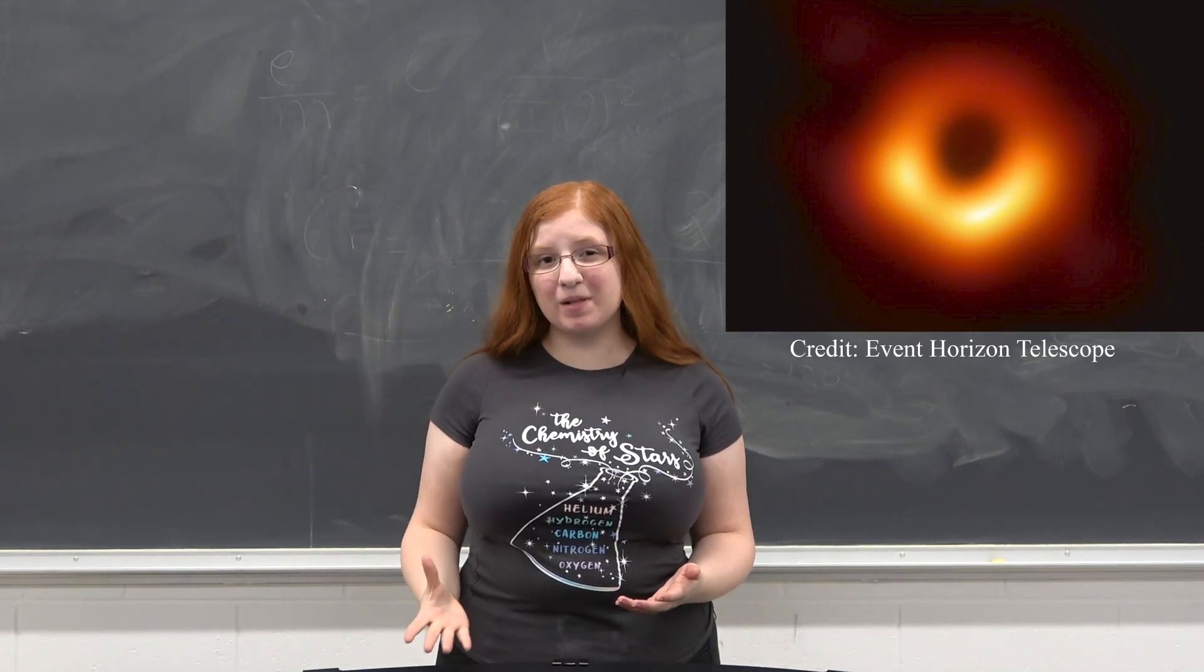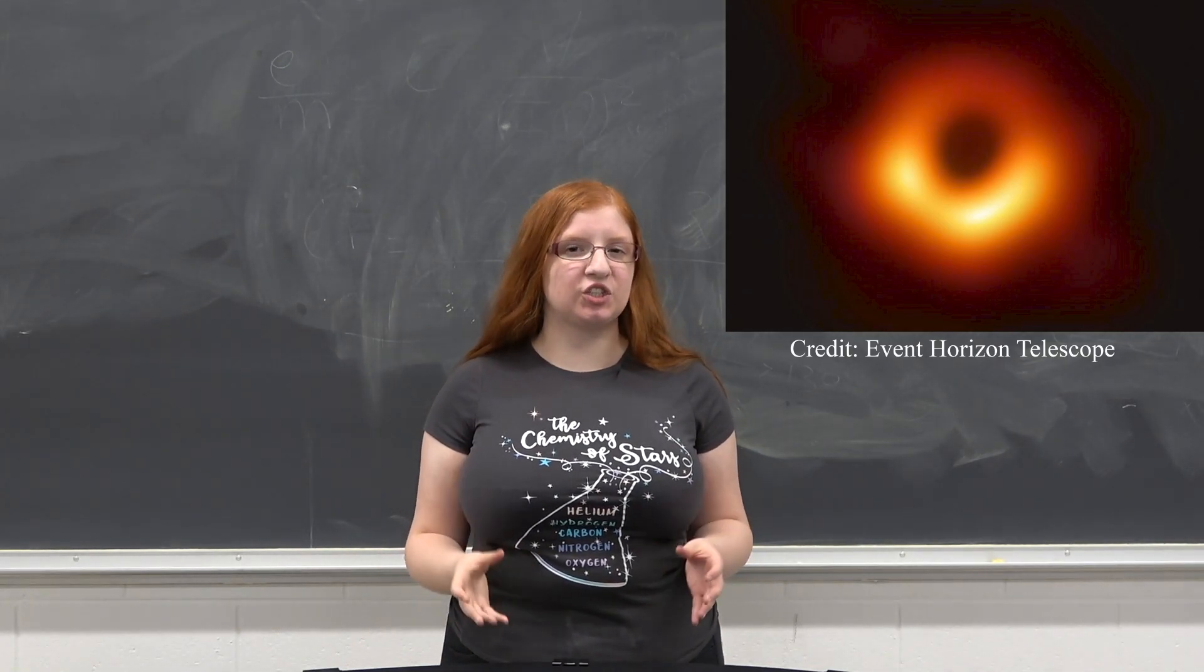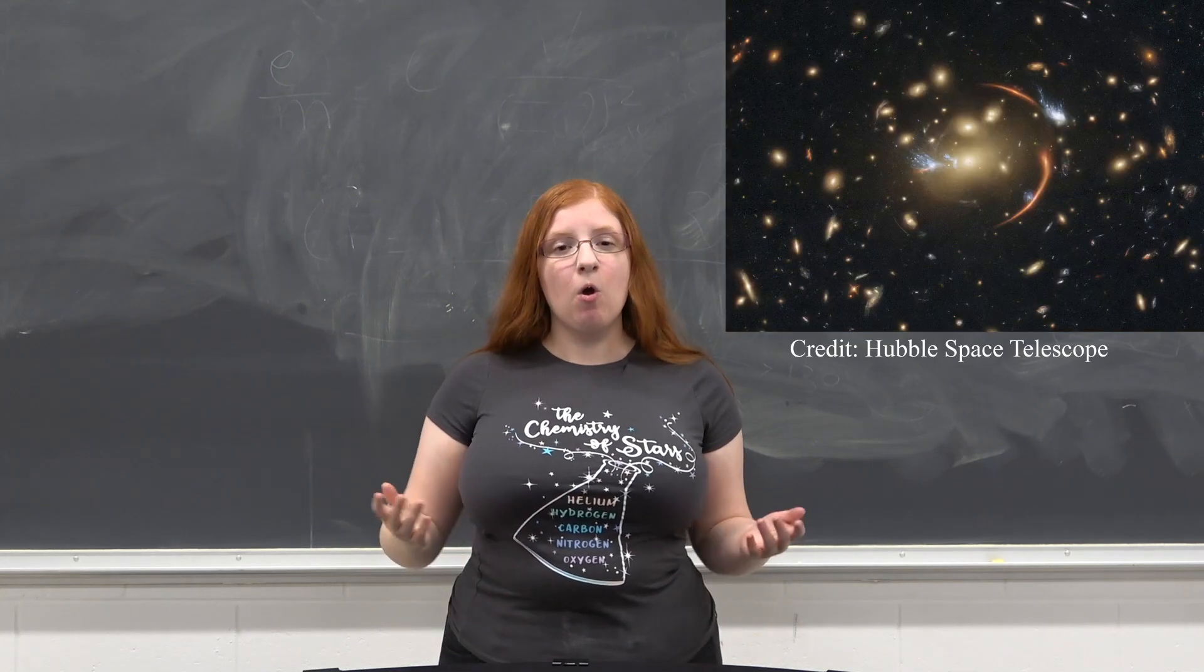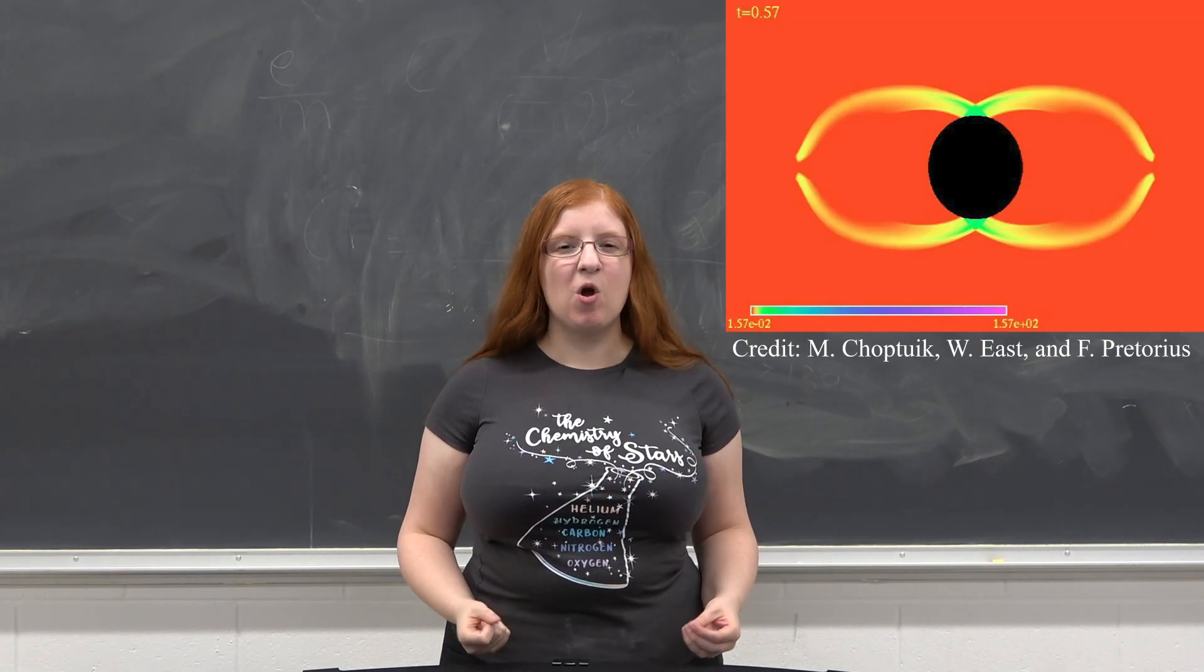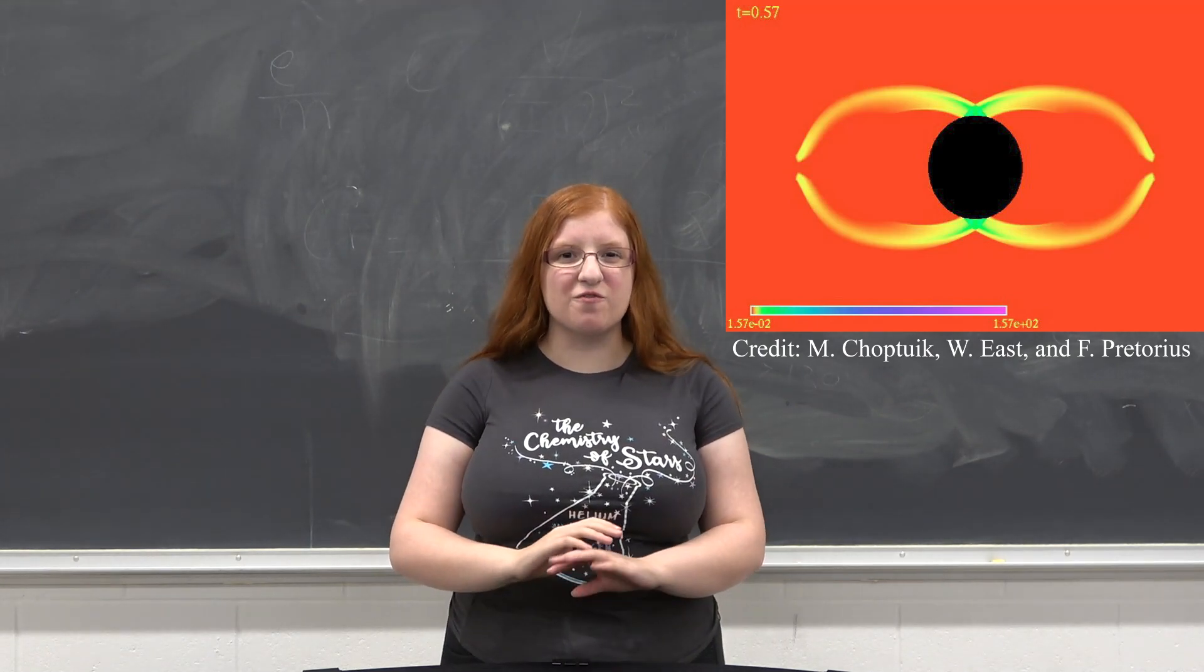Like how you don't actually see the black hole itself and instead you see its shadow or any material around it if it has any, or how black holes are natural telescopes because of how they bend light, or how there are micro black holes that are invisible to us.